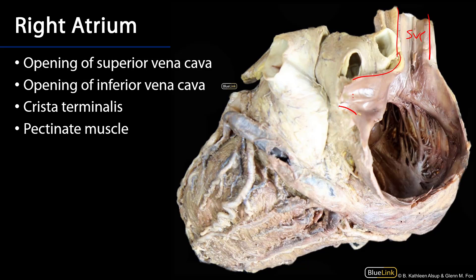Coming down, this is our inferior vena cava, the IVC. That vessel is draining all of the tissues inferior to the diaphragm. We can see this smooth-walled area called the sinus venerum, and it is separated from the pectinate muscle by a very lovely ridge of tissue called the crista terminalis.